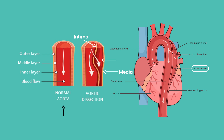Aortic dissections are broken up into two types. There's aortic dissection of the ascending aorta, known as a type A aortic dissection, and aortic dissection of the descending aorta, known as type B. The treatment differs for each one, and we'll discuss that a little later on.